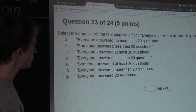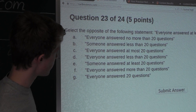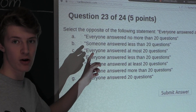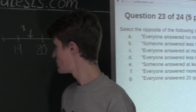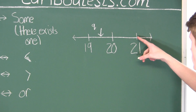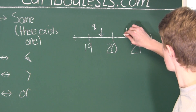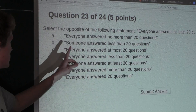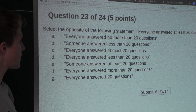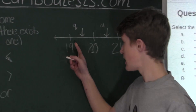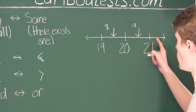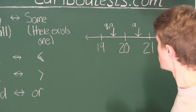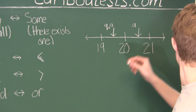Now let's look at option A: 'Everyone answered no more than 20 questions,' which means it distinguishes between 20 or less and also 21 or more — so that is option A. Now option B: 'Someone answered less than 20 questions,' and less than 20 means 19 or less, and it also distinguishes between 20 or more — so we have Q and B in that range. That is option B.